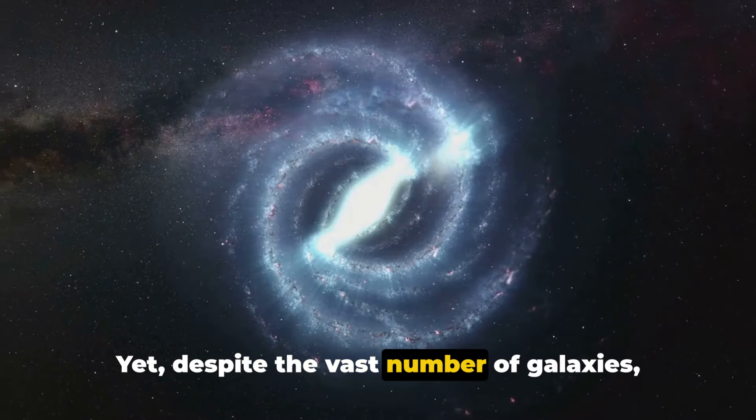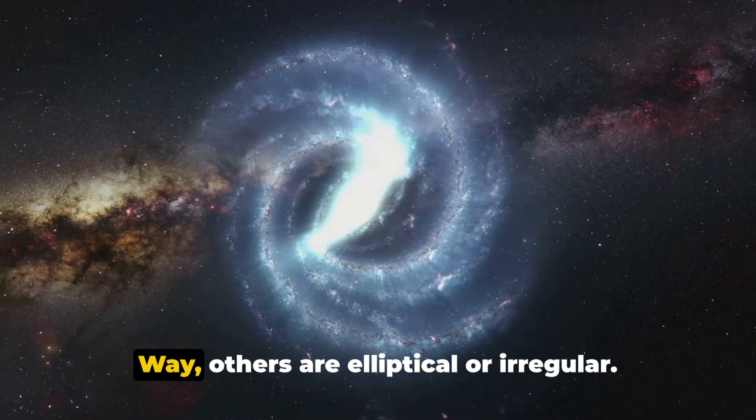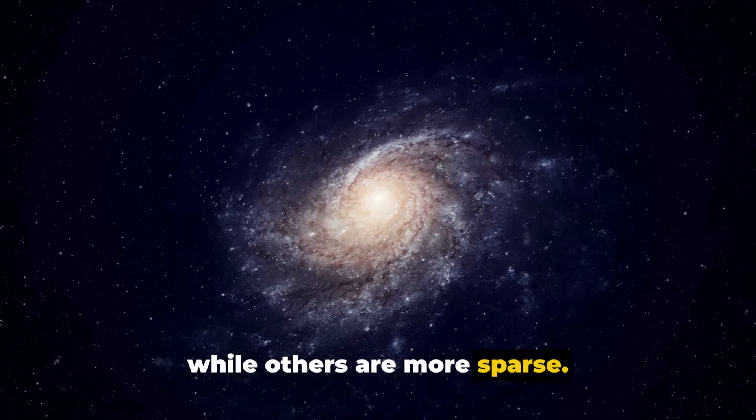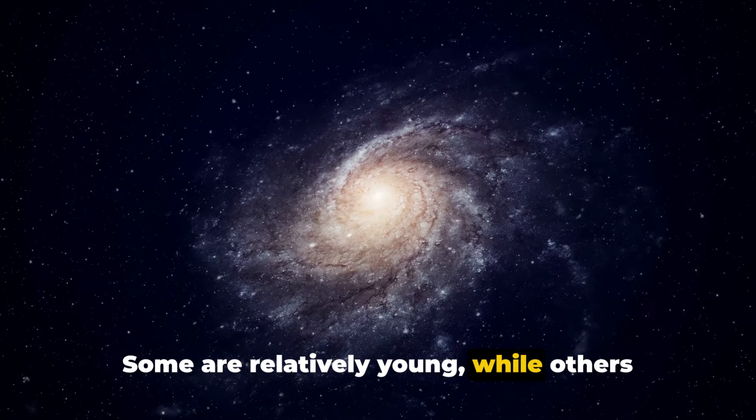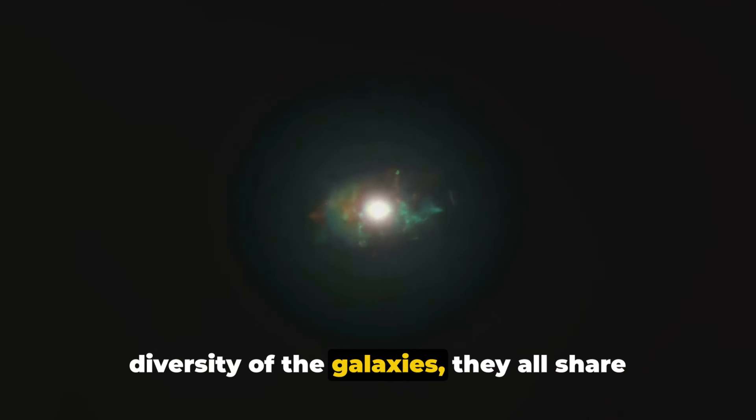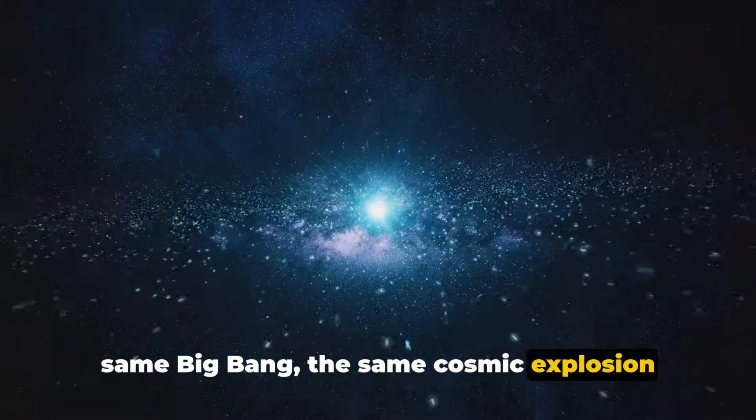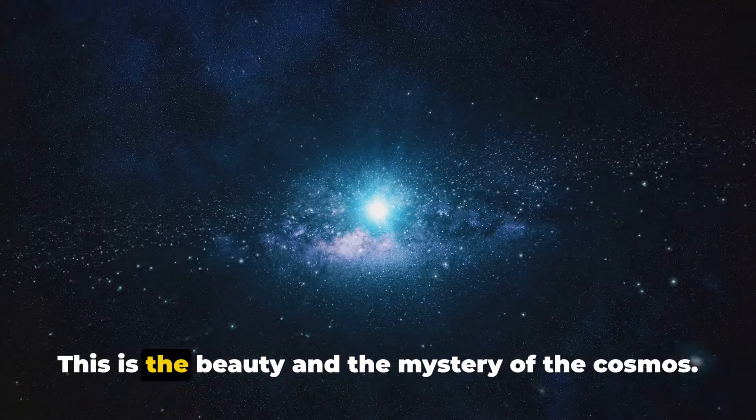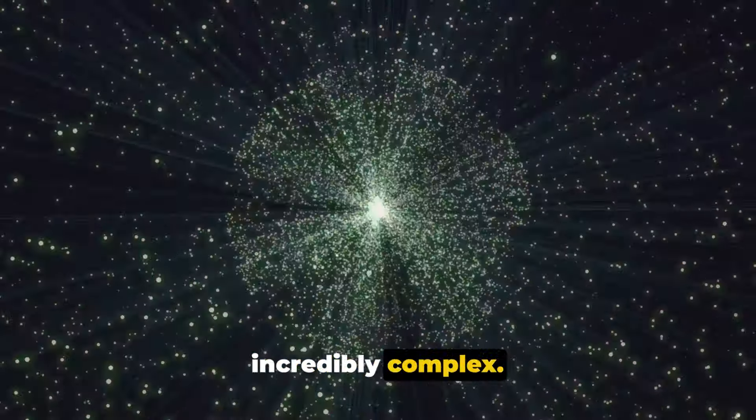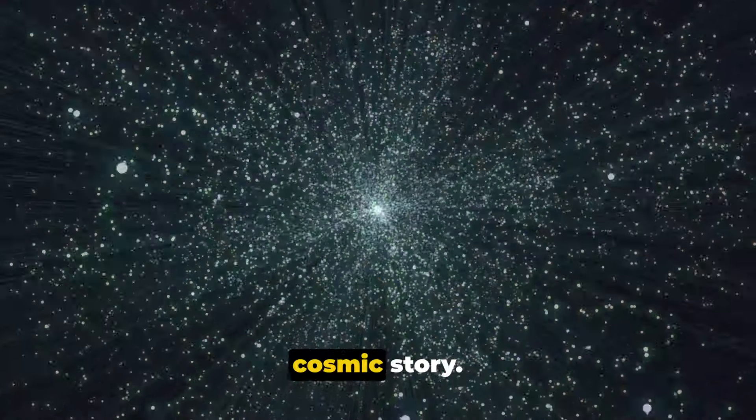Yet, despite the vast number of galaxies, each one is incredibly unique. Some are spiral-shaped like our own Milky Way, others are elliptical or irregular. Some are teeming with stars and planets, while others are more sparse. Some are relatively young, while others have been around for billions of years. And yet, despite the vastness and diversity of the galaxies, they all share a common origin. They all came into existence from the same Big Bang, the same cosmic explosion that marked the beginning of our universe. This is the beauty and the mystery of the cosmos. It's vast, it's diverse, and it's incredibly complex. Yet, at the same time, it's all interconnected, all part of the same grand cosmic story.